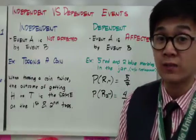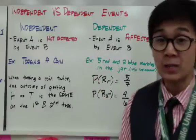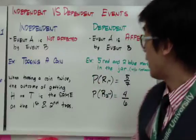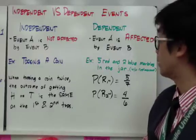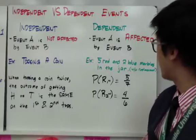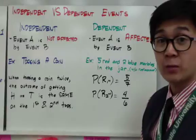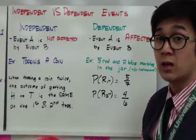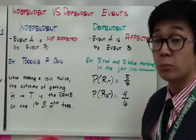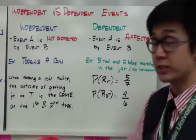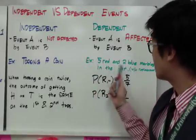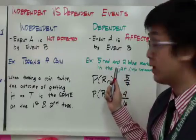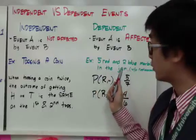A dependent event is one where event A is affected by event B. For example, with five red and two blue marbles in a jar, and without replacement, we find the probability of getting the first red marble and then the second red marble. The sample space here is five plus two, giving a total of seven marbles in the jar.